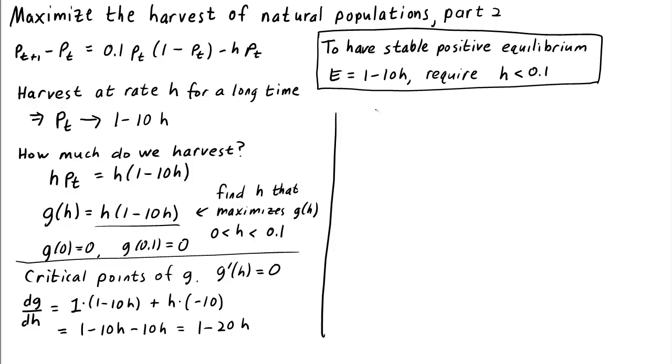If we set this equal to 0, we see that H must be 1/20. So the critical point of G occurs when H is 1/20, which interestingly is half the low density growth rate 1/10.